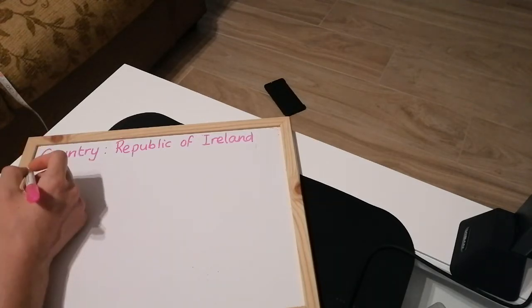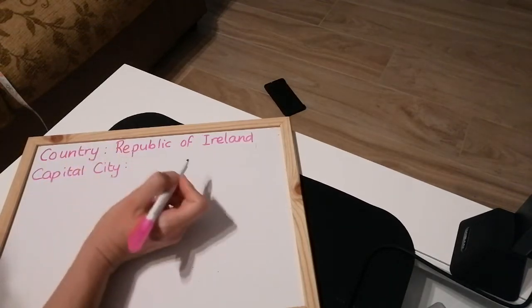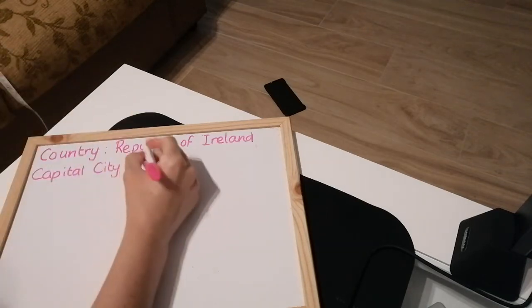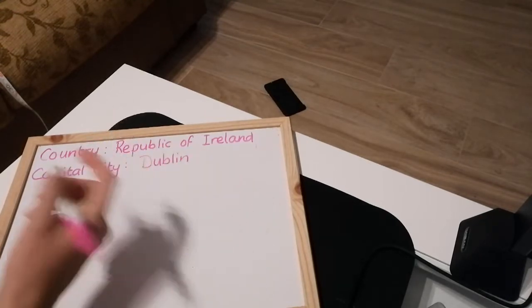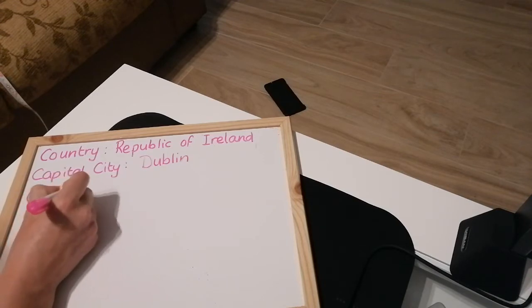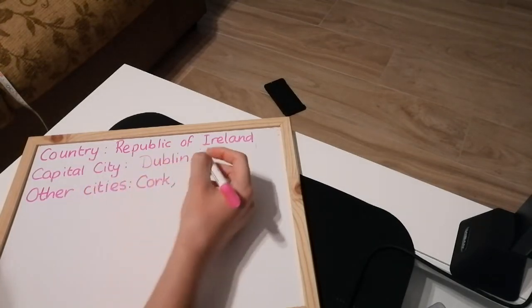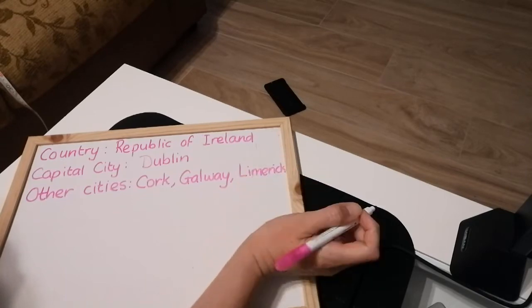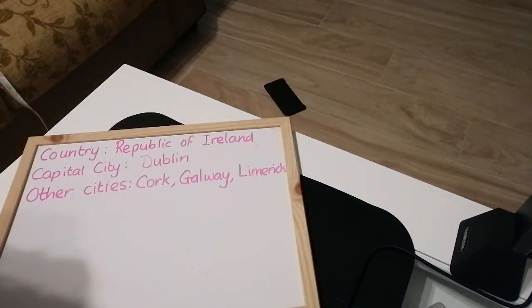I'm going to put down 'Capital City.' The capital city is the main city. The capital city of the Republic of Ireland — maybe you've been there — I'm from the capital city, which is Dublin. Dublin gets a capital letter. Other main cities in Ireland include Cork, Galway, and Limerick. Some of you might think Belfast, but Belfast is in Northern Ireland, not in the Republic of Ireland.